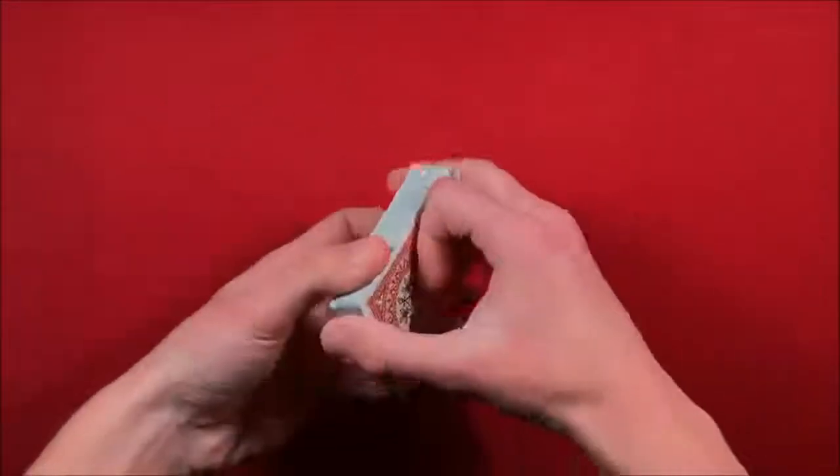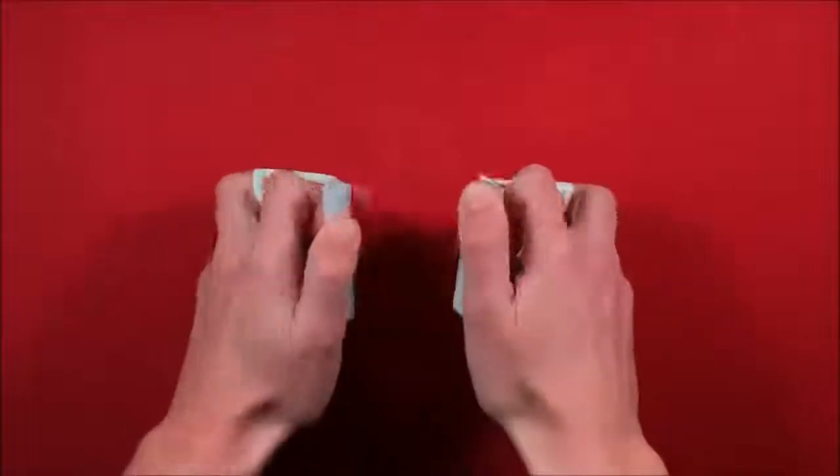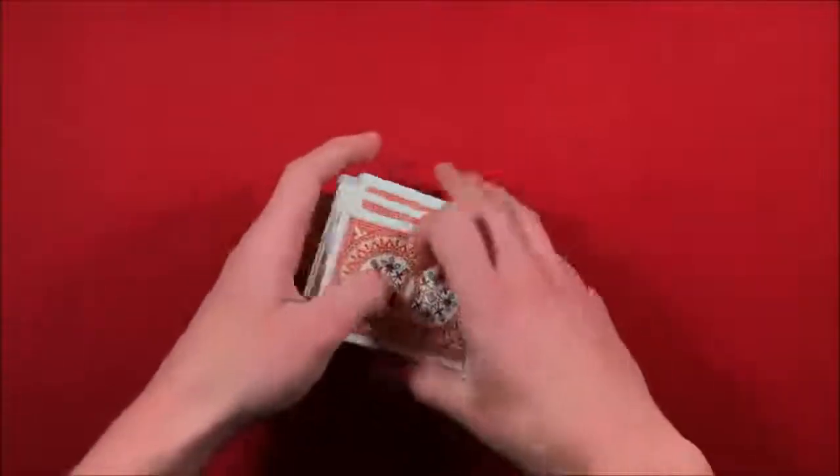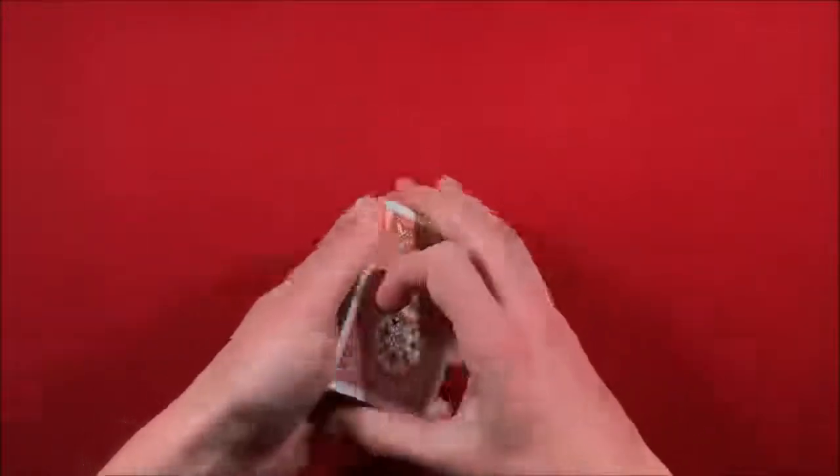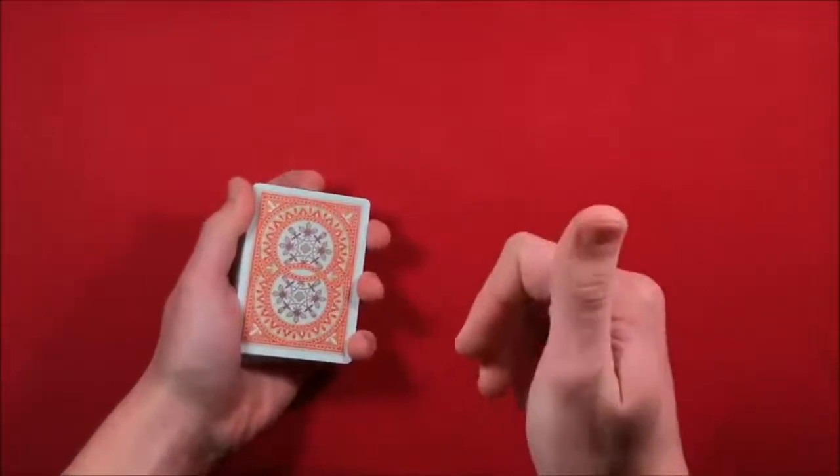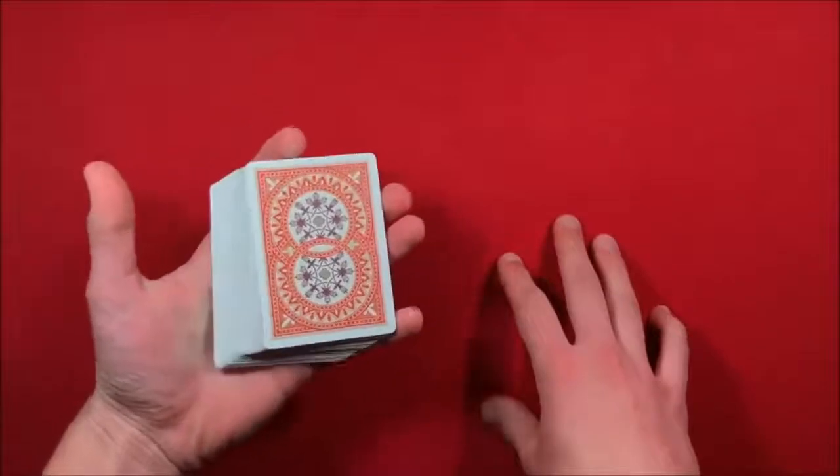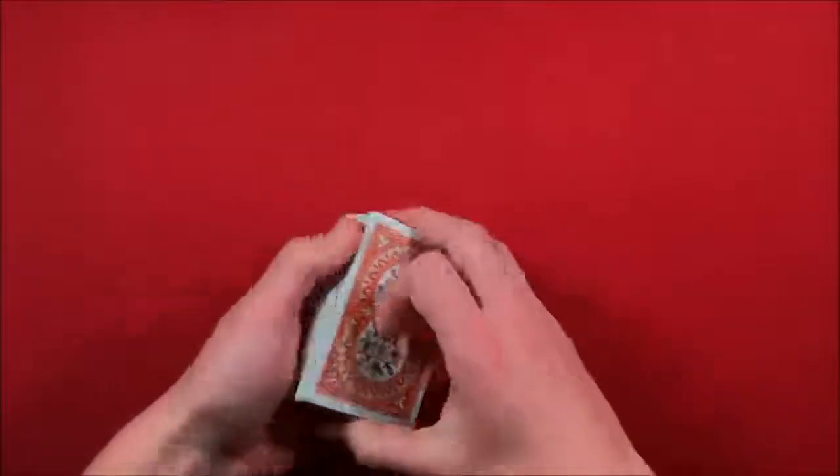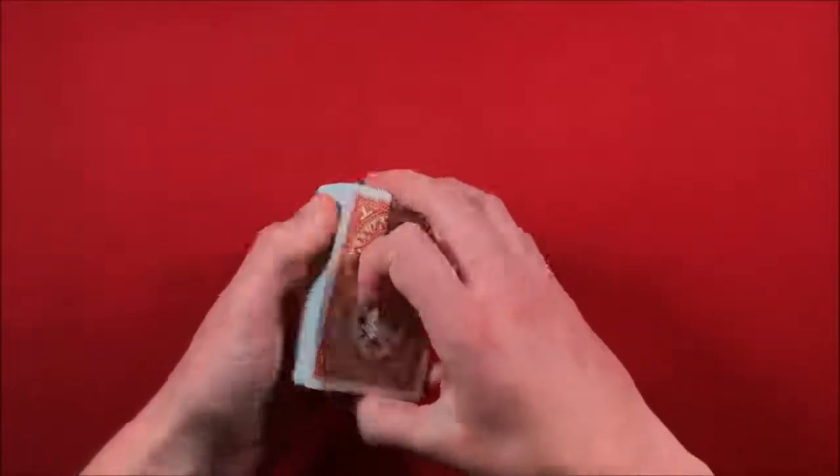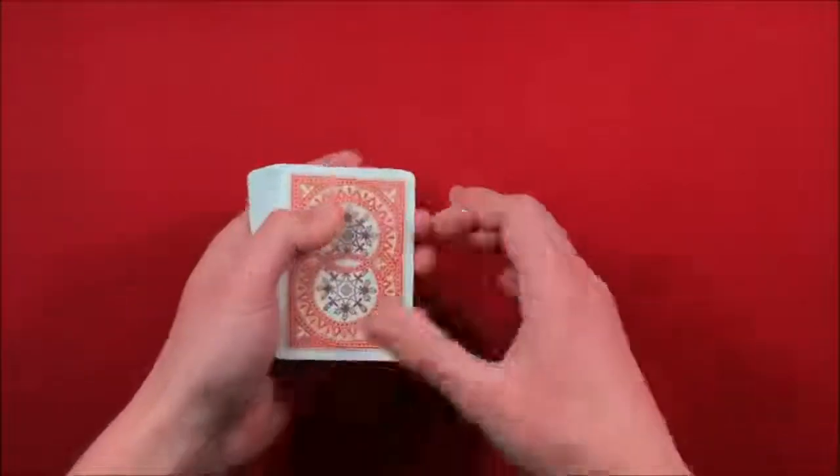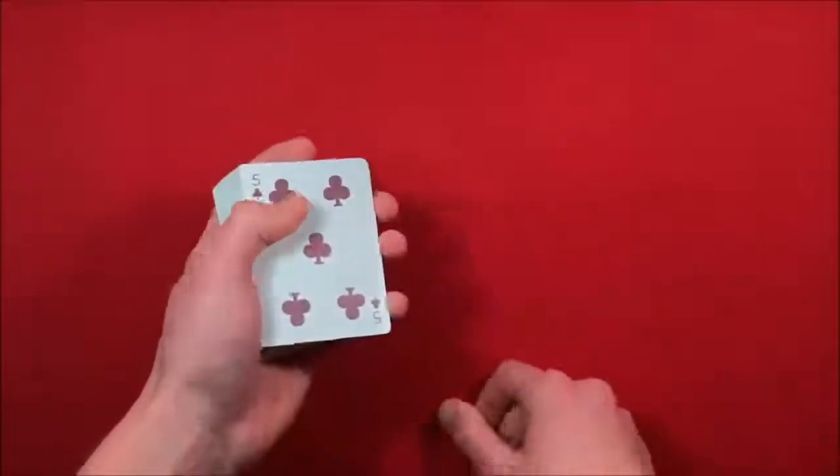To begin, the first thing you want to do is you could have the spectator shuffle up a borrowed deck or anything—they could shuffle it up. At this point all you have to do is get a double lift, so I'm going to leave a link on the screen for the double lift here, because if I explain this video it kind of takes too long and the video I already have is a lot more detailed.